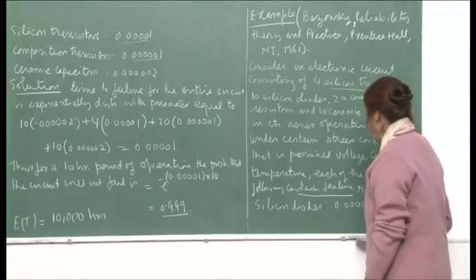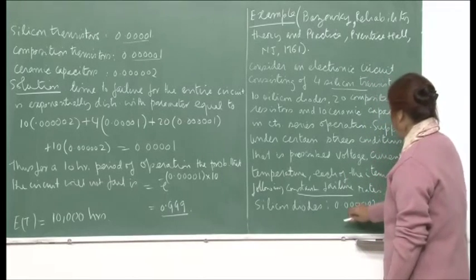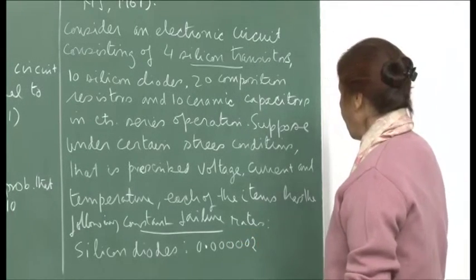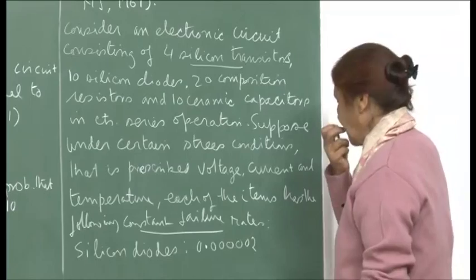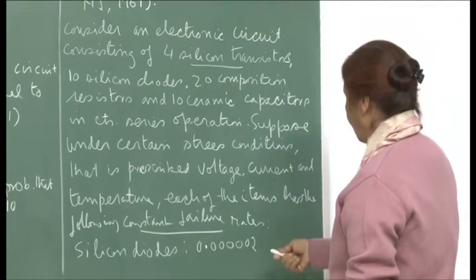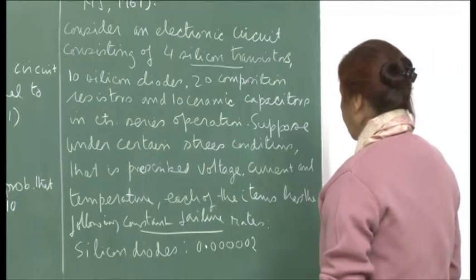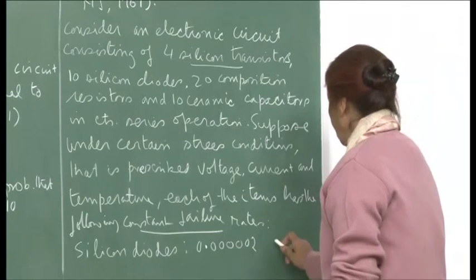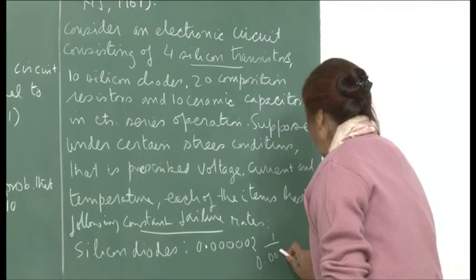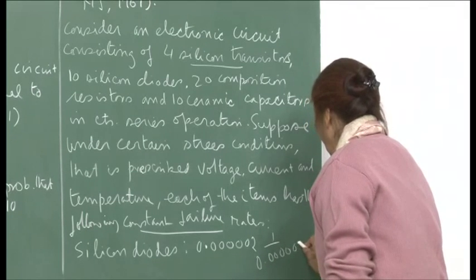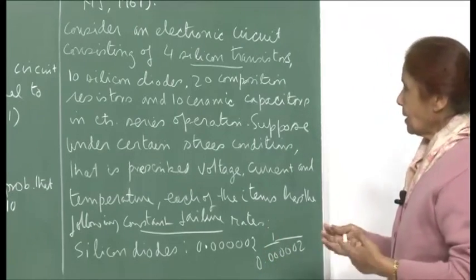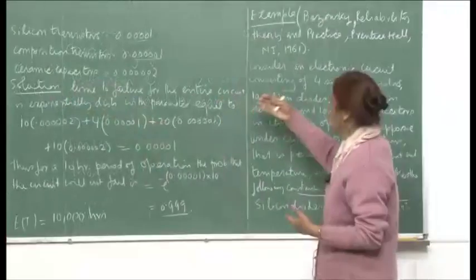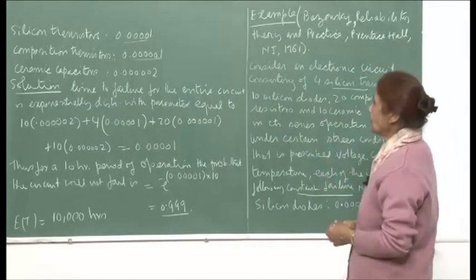For silicon diodes, the parameter is 0.00002 per hour. The mean failure time would be 1/0.00002, which is a very large number — thousands of hours. Similarly, there are various numbers given for the other components: each follows an exponential failure law, and we assume they function independently of each other.